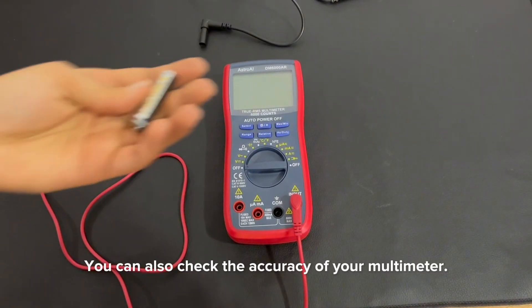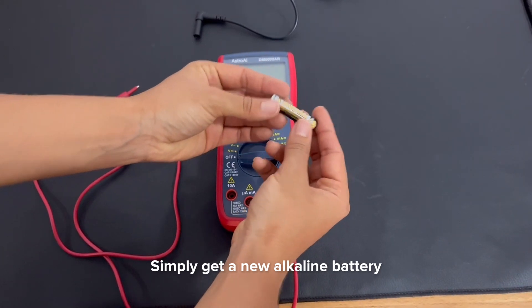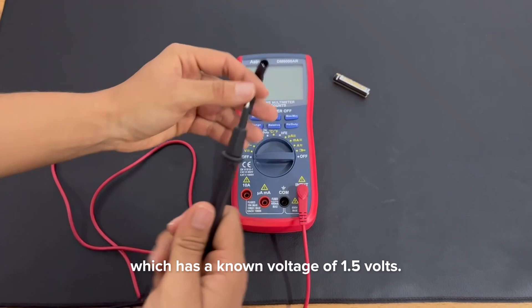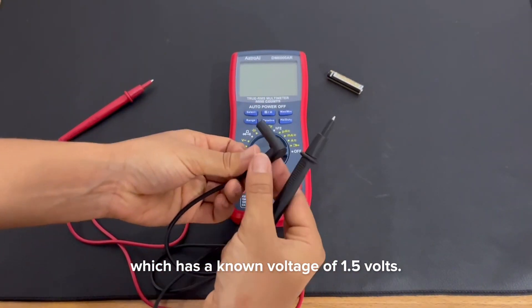You can also check the accuracy of your multimeter. Simply get a new alkaline battery, like a AA or AAA battery, which has a known voltage of 1.5 volts.